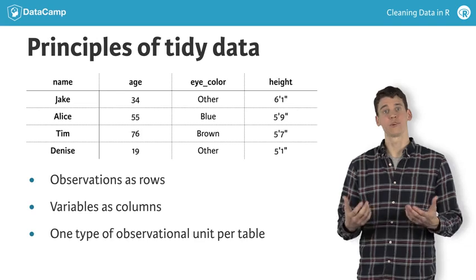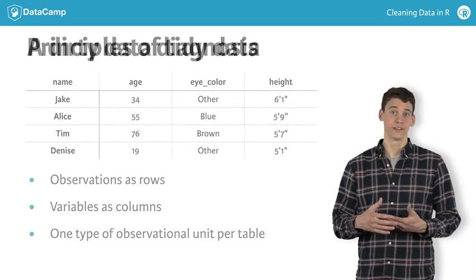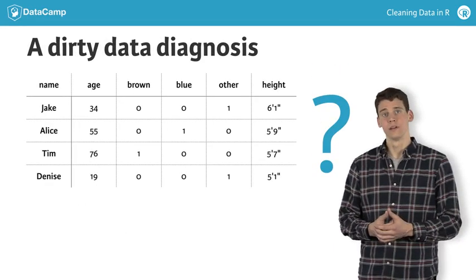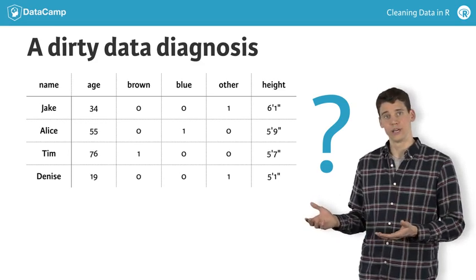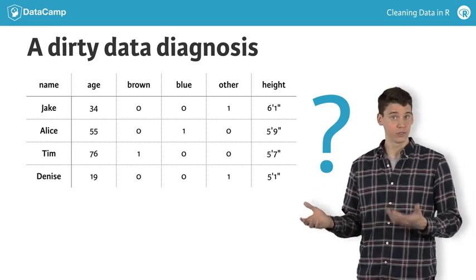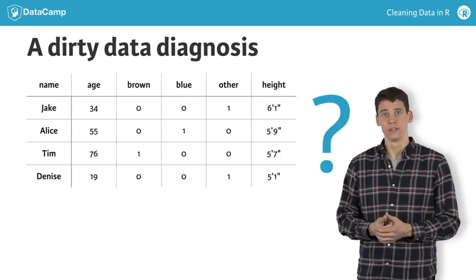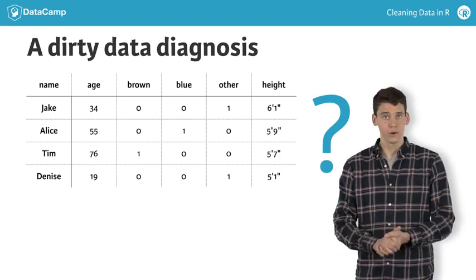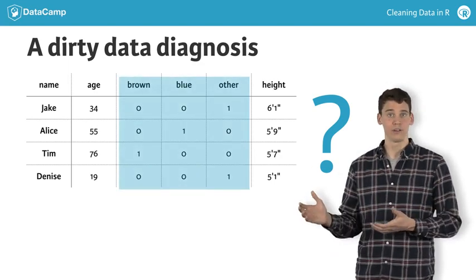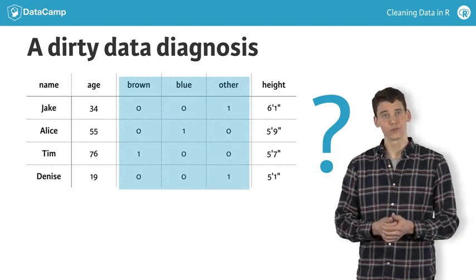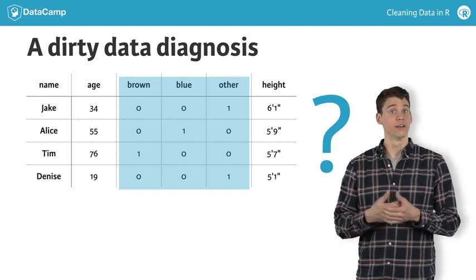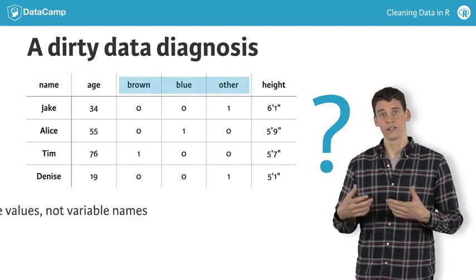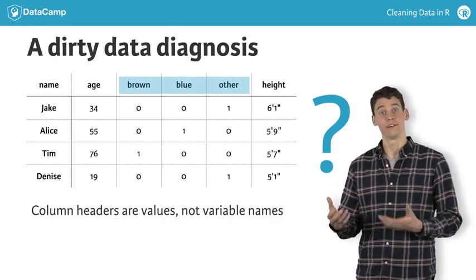Now that we've seen the principles of tidy data, let's look at a simple example of messy data and try to figure out what's wrong with it. Observations are still in rows, and we only have one type of observational unit — people — in this table. It even appears that each column is a variable. Notice, however, that the columns brown, blue, and other are actually values of what was previously the eye color variable. This is a common symptom of messy data: column headers are values, not variable names.